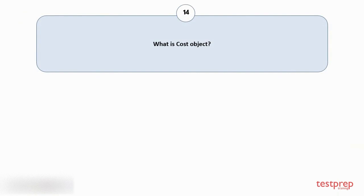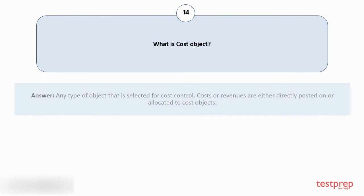Question number 14: What is cost object? Any type of object that is selected for cost control. Costs or revenues are either directly posted on or allocated to cost objects.